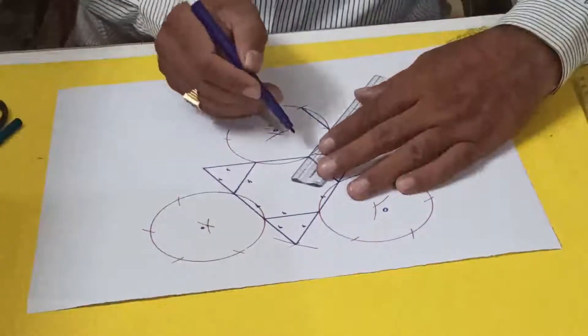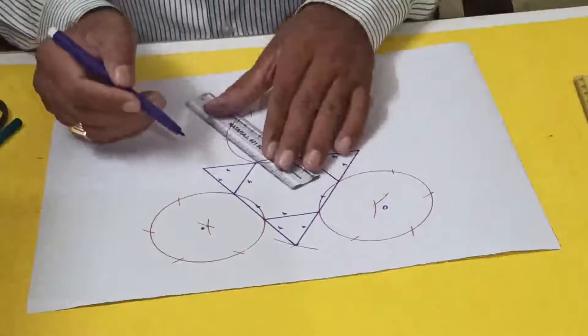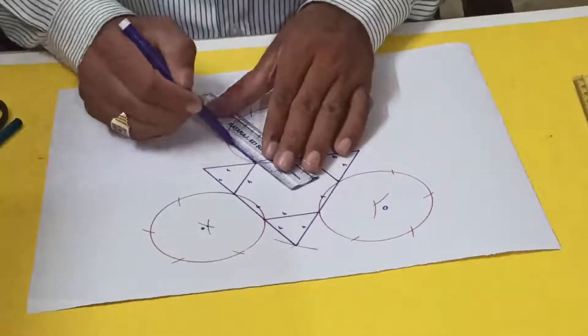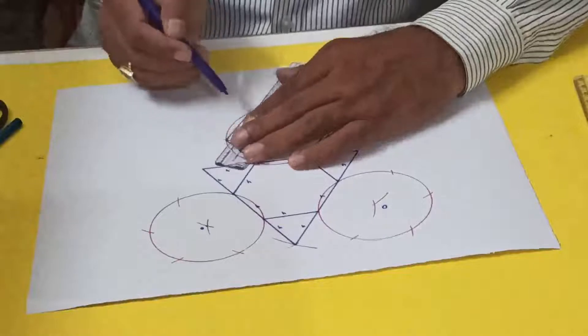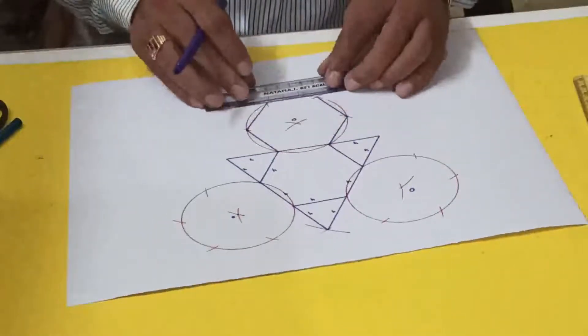So this one and this one, also join using cutter. Also you can make it. Now I'm using compass, so this way you can do it. So this is one part is over.